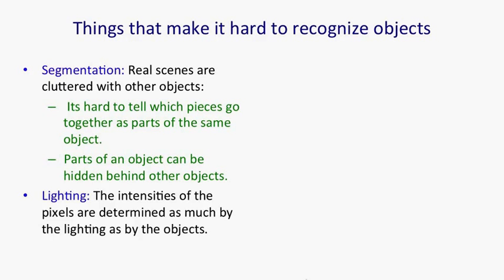Another thing that makes it very hard to recognize objects is that the intensity of a pixel is determined as much by the lighting as it is by the nature of the object. So, for example, a black surface in bright light will give you much more intense pixels than a white surface in very gloomy light.